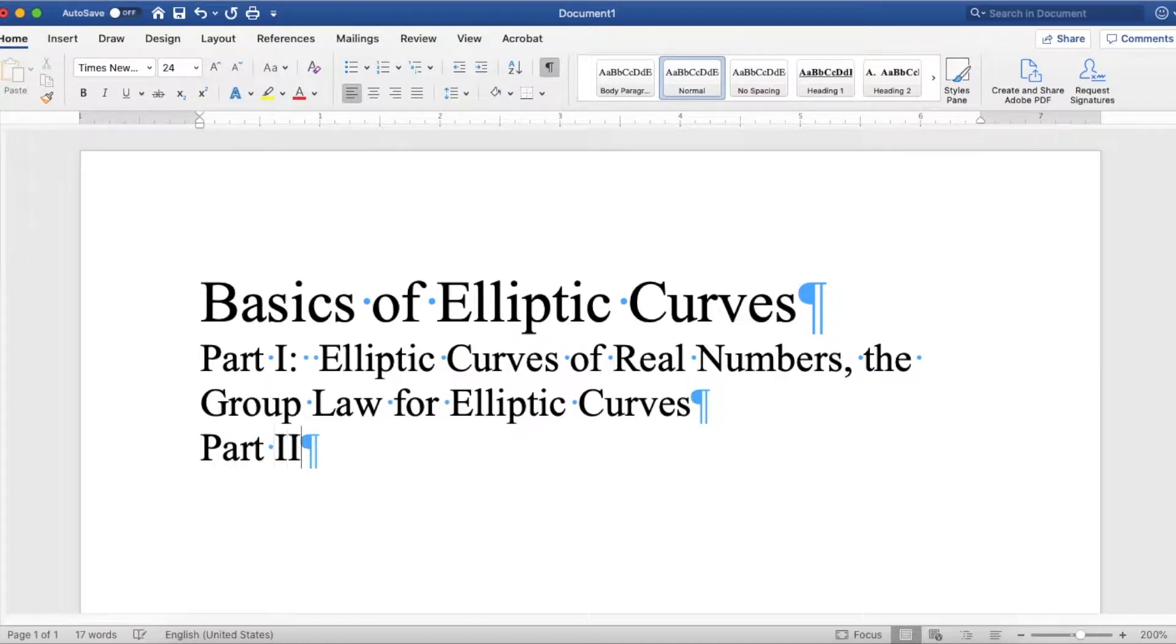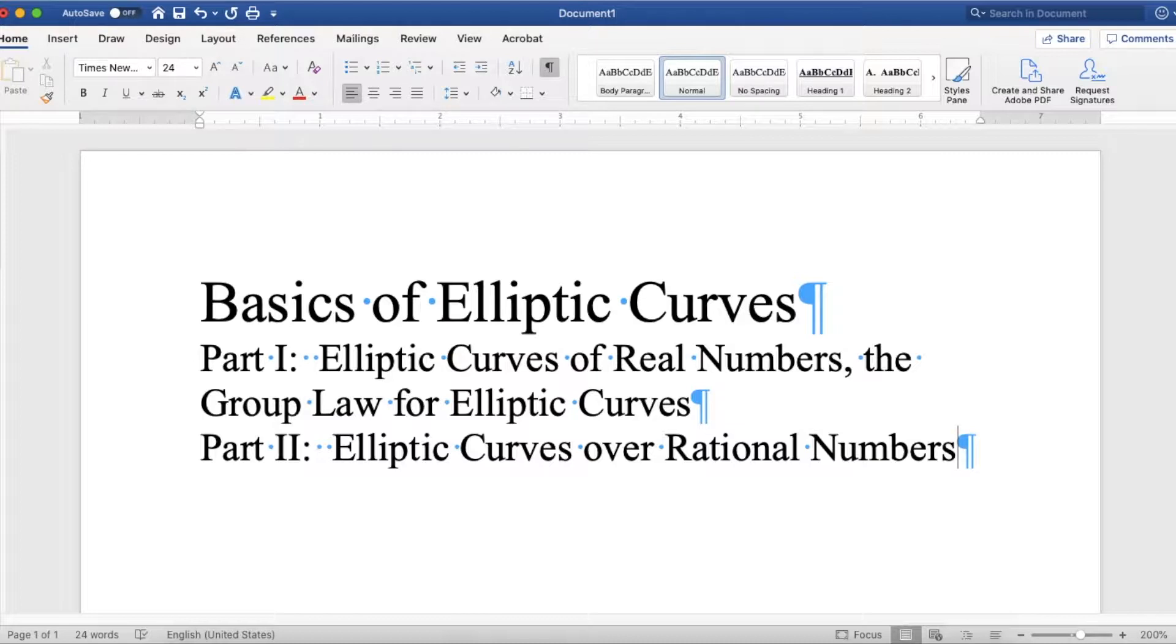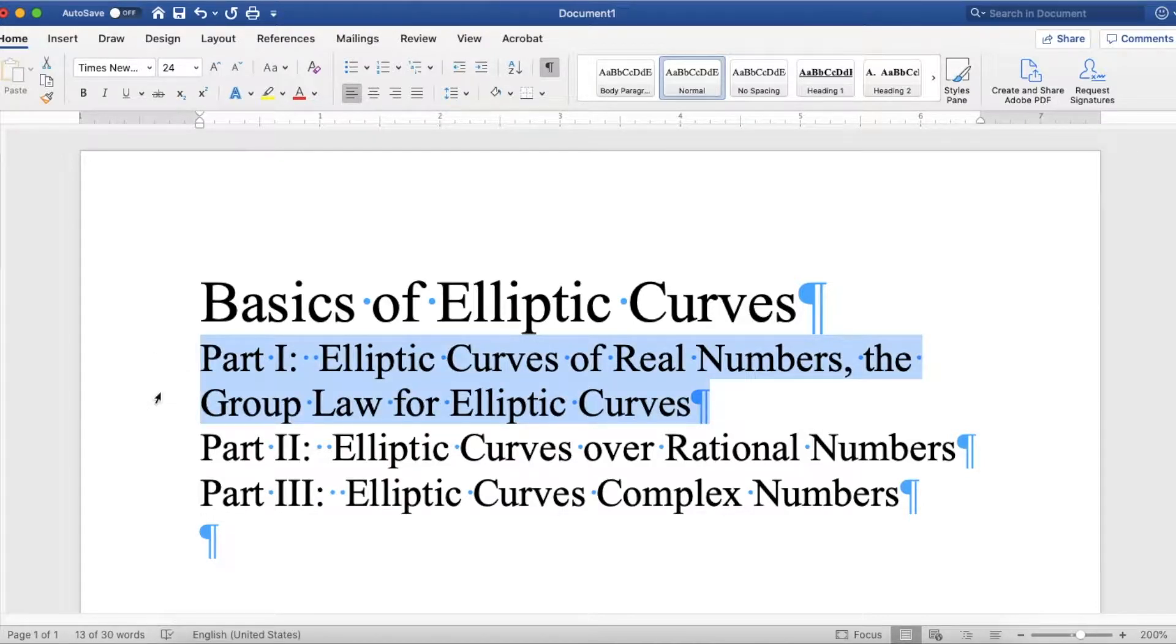Part two will be elliptic curves over rational numbers, in particular the group law for rational numbers. And then part three is elliptic curves over complex numbers, which is where I think we get the connection to modular forms. It's that combined with the group structure is what makes this all work.